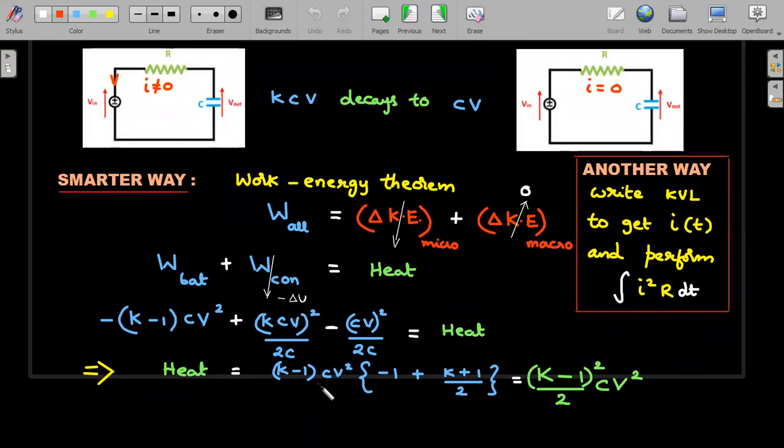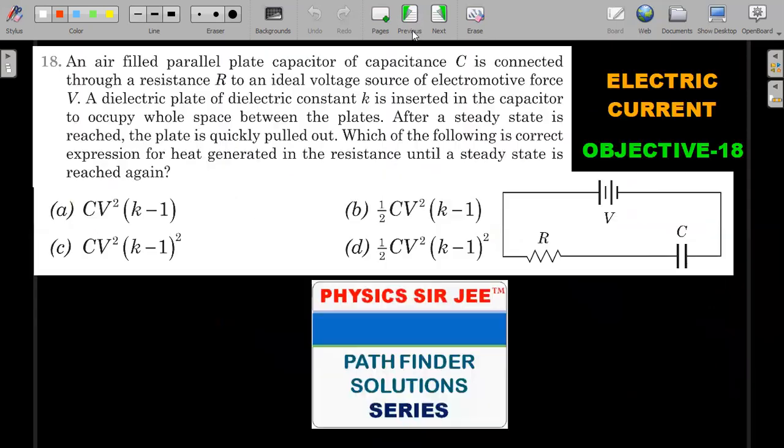If you carefully go slightly up, the value of the heat therefore is this entire term. If I take (K minus 1)CV squared common, it will be minus 1 here, and you could see K squared minus 1 here. If you take K minus 1 common, it will be K plus 1 divided by 2 coming out from these two terms. Rearranging, you will end up getting (K minus 1) squared divided by 2 into CV squared, which is what you are going to search in the options, and I think I see it in option D.